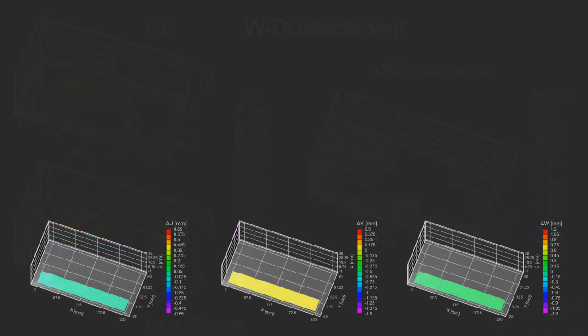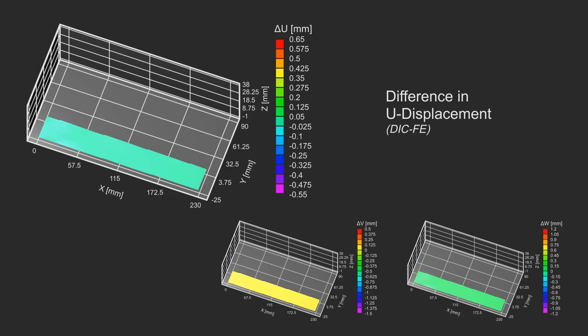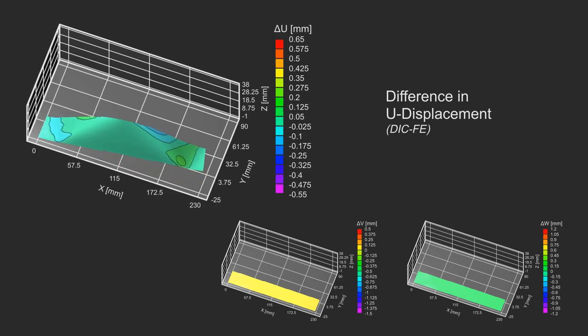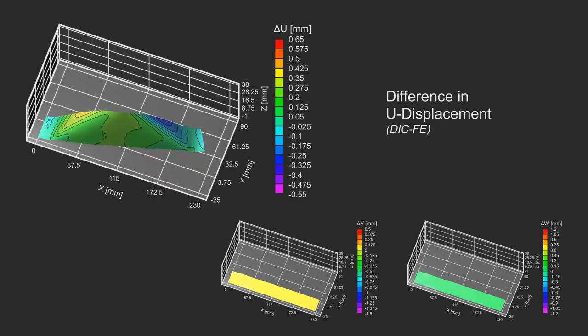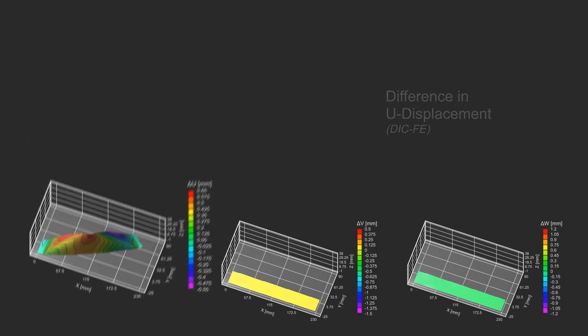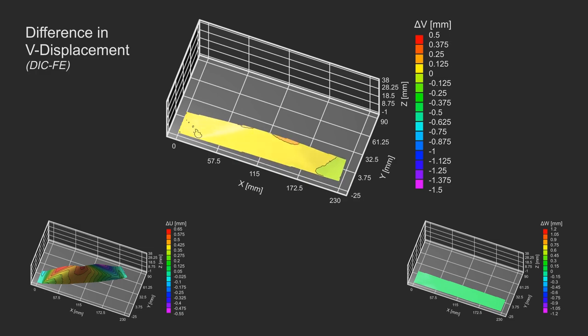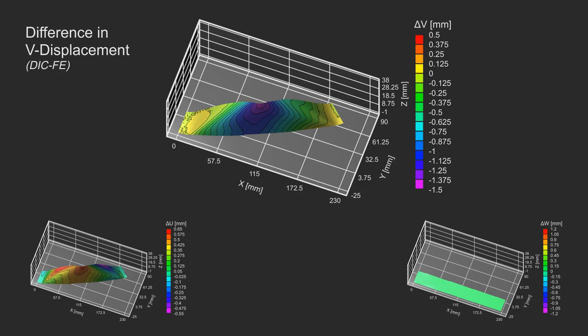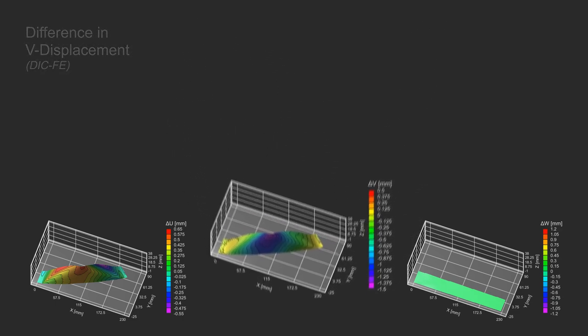The following animations show the difference plots in more detail, and illustrate some of the animation features available in VIC-3D. Most plot properties, such as scaling, positioning, viewing angle, opacity, and many more, can be animated in the VIC-3D IRIS animation engine. Also note the smooth animation obtained from just a few measurements.